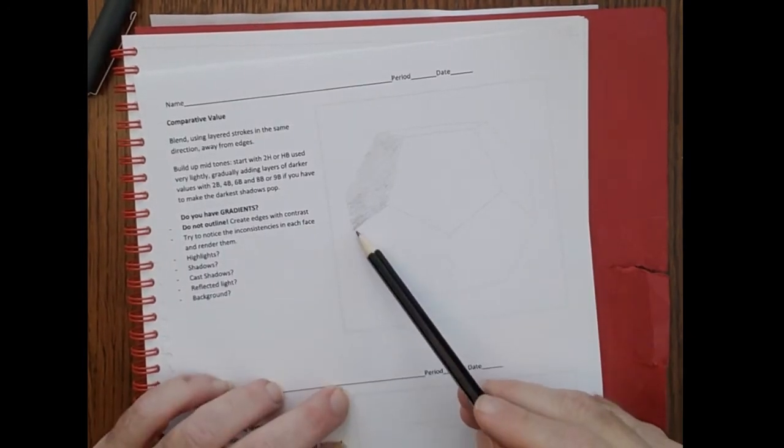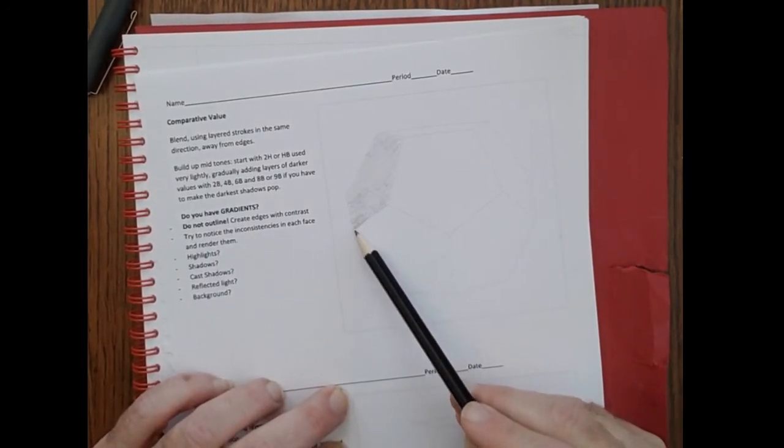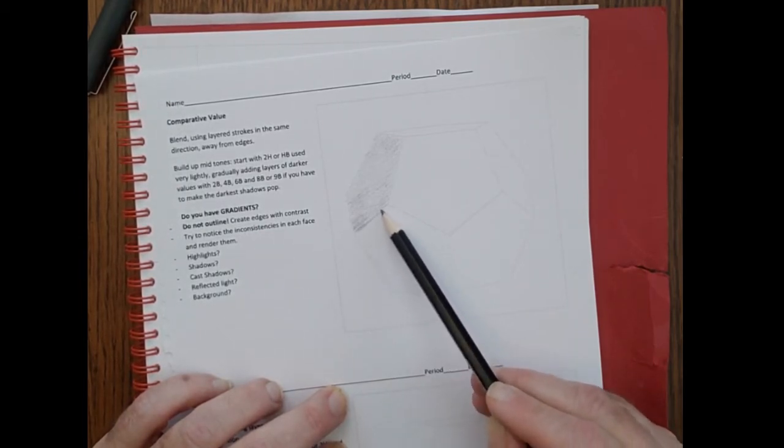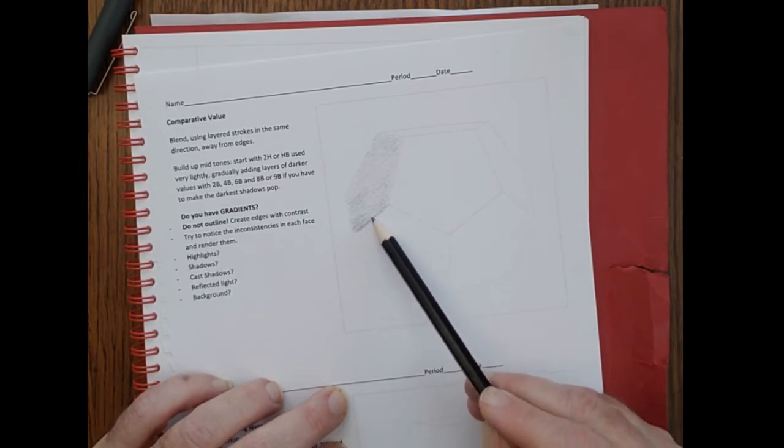So for the second one, I'm just going to make it a little bit darker, and I'm just going to stick with the 2H because I have a little bit of a heavy touch. So I'm just going to make this a little bit darker, especially up here at the top where they meet.